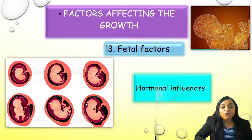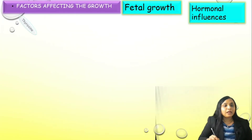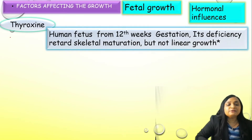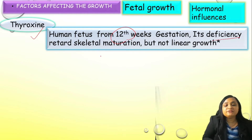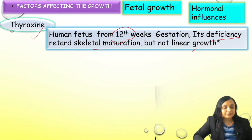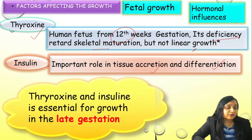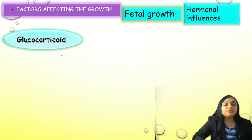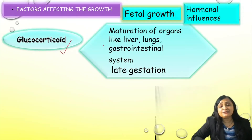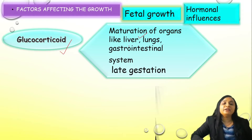Let us discuss hormonal influence on fetal growth. The first and foremost hormone is thyroxine, which starts secreting from the third trimester of gestation, and its deficiency will retard the skeletal maturation. However, it does not have any effect on linear growth. The second important hormone is insulin — it has a very important role for tissue accretion and differentiation. So thyroxine and insulin are essential in late gestation. The third most important is glucocorticoid, which does not have a direct effect but has effect on the maturation of organs like liver, lung, and GIT, especially in late gestation.